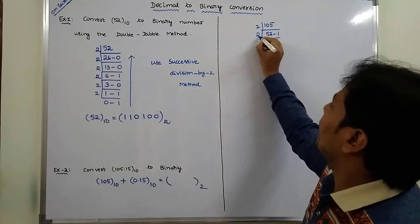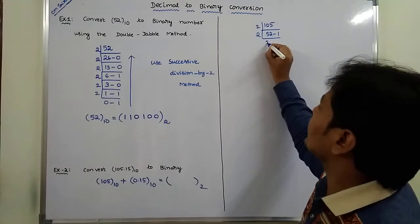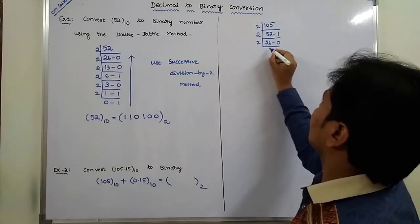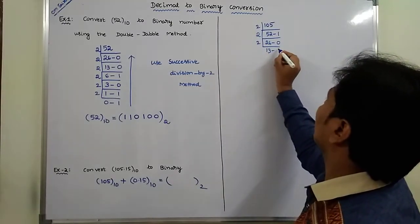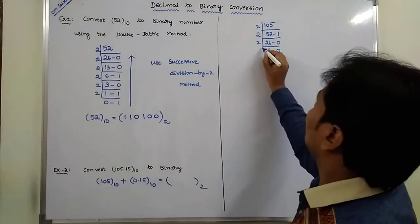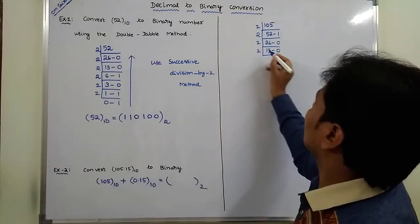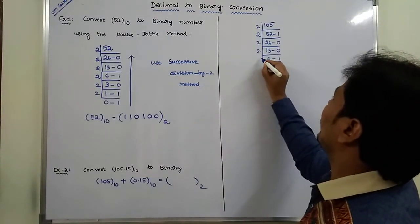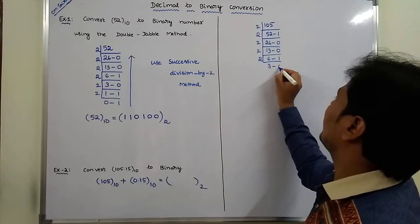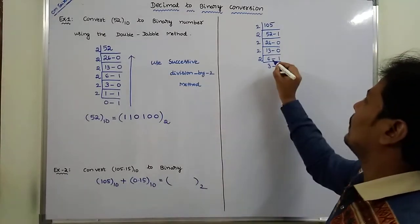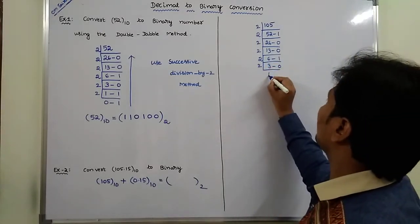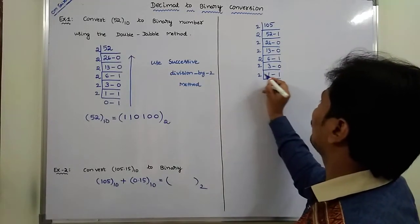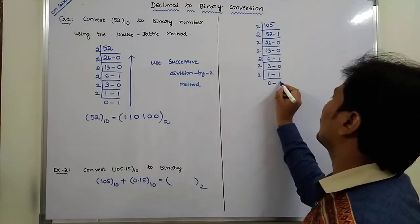2 divides 52, 26 times, remainder is 0. 2 divides 26, 13 times, remainder is 0. 2 divides 13, 6 times, remainder is 1. 2 divides 6, 3 times, remainder is 0. 2 divides 3, 1 time, remainder is 1. 2 divides 1, 0 times, remainder is 1.